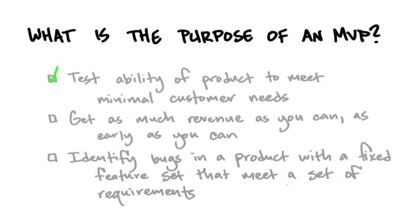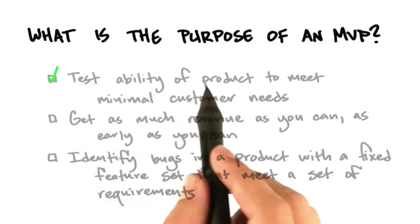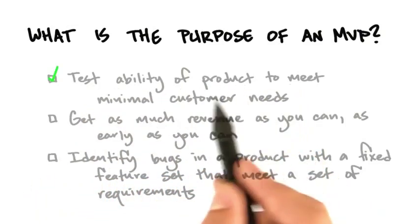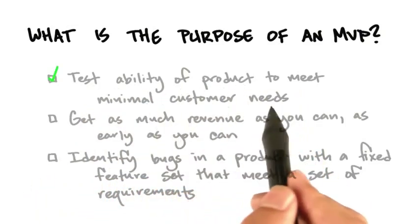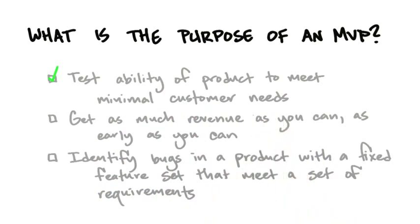Explicitly, the goal of an MVP is not an engineering alpha or beta test. The goal is not to use this process to find all the bugs, though they might come up. The goal of an MVP is to actually test the ability of the product to meet minimal customer needs, as in choice one.